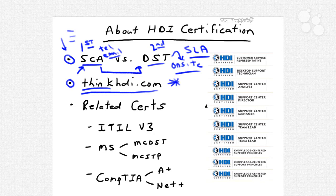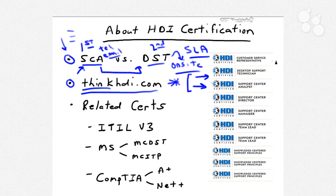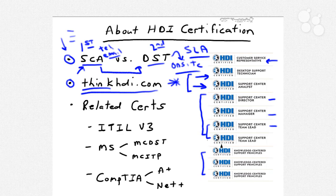The full catalog of Help Desk Institute certifications includes the support center analyst title, which is where we are, as well as the HDI desktop support technician title. There's also a general customer service representative credential, and several targeted support center credentials for management: support center director, support center manager, support center team lead. The bottom credential is knowledge-centered support principles, which deals with a problem-solving methodology called KCS, or knowledge-centered support — we'll talk about that later in the training.